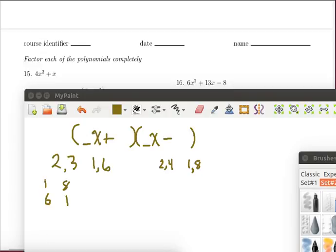For the x's I might choose a 1 and a 6 and an 8 and a 1, then I'd have a 1 times 1 is 1 and a 6 times 8 is 48 and those aren't going to subtract and give me 13 so that doesn't look like a good choice.